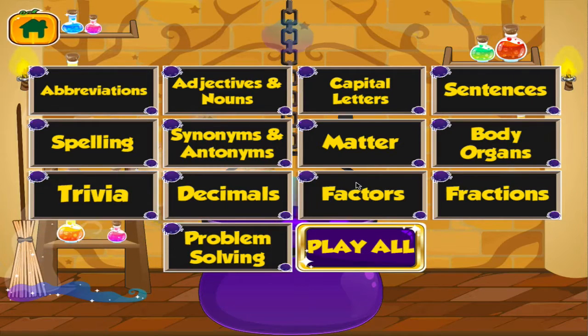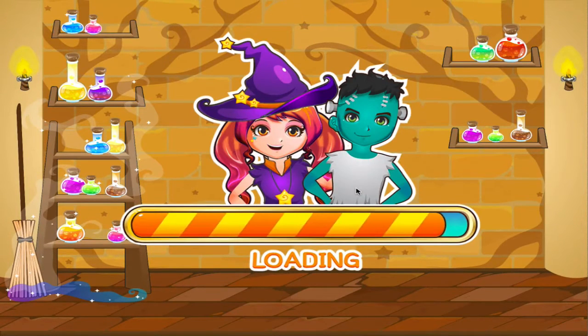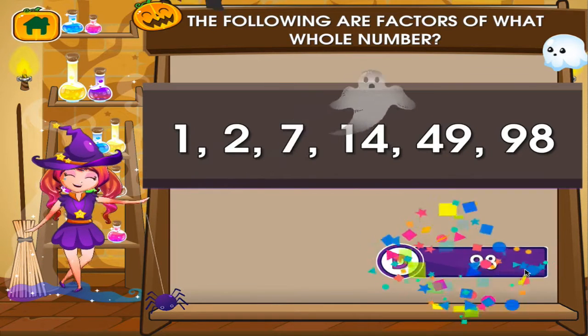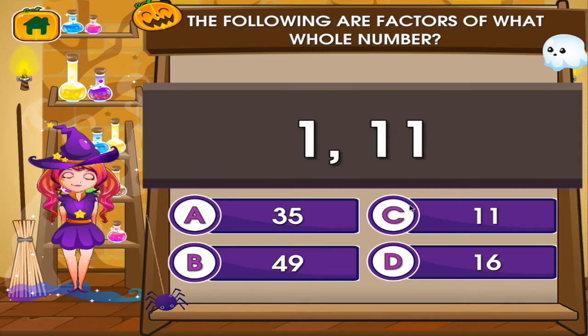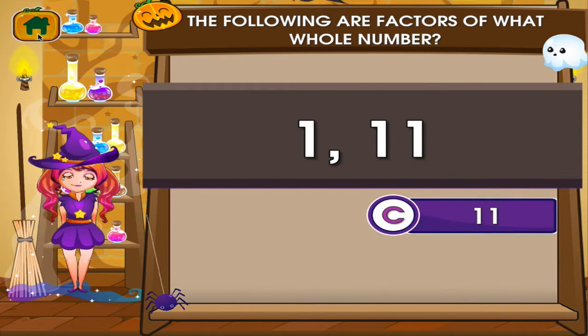Choose the activity you want to play. Factors. Tap the correct answer. You're good at this! Tap the correct answer. Superb!